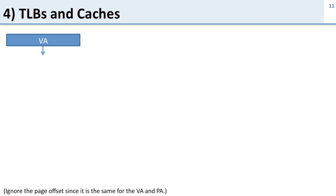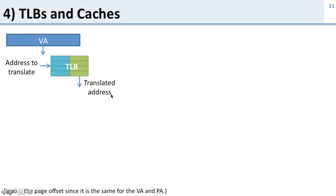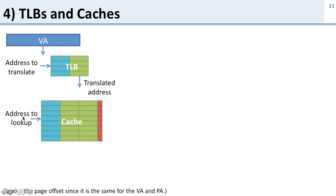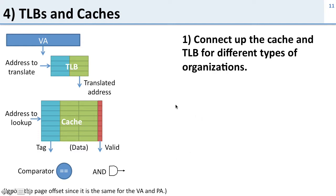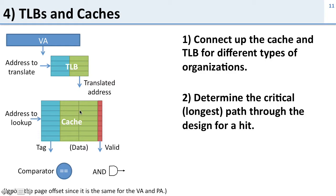Now let's talk about TLBs and caches. We'll give you a set of building blocks: a virtual address from the processor, a TLB that takes an address and outputs the translated address, a cache that takes an address and outputs the tag and data plus a valid bit, a comparator for checking equality, and an AND gate. We'll connect the cache and TLB in different organizations and find the critical path through the design on a cache hit.